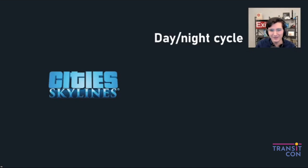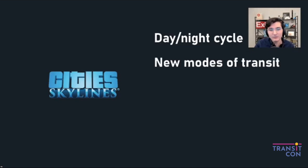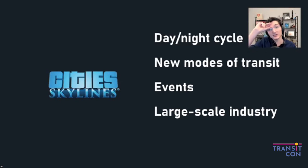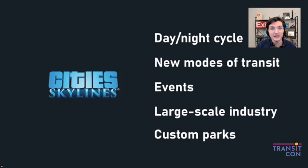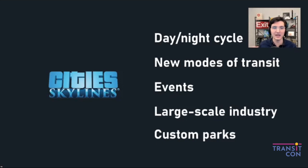Since launch, City Skylines has added a day-night cycle, new transit modes, events so you have to plan for event traffic — moving people around major sporting events and concerts that really stress your throughput — large-scale industry with more in-depth planning choices, and custom parks along with campuses and new airport stuff. The dynamic around parks is interesting because it used to be you just plopped down one building and it was done; now you have to balance what you can afford against the scale and type of park or campus.